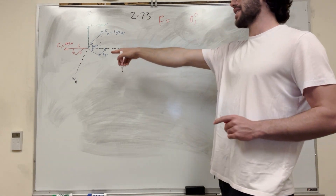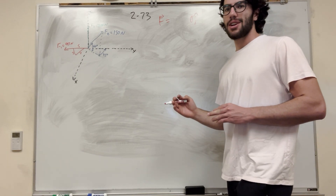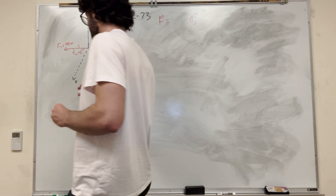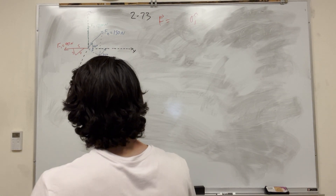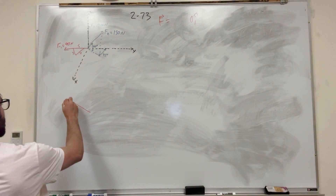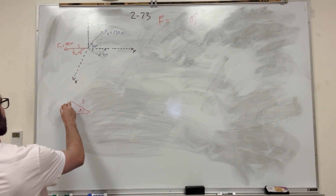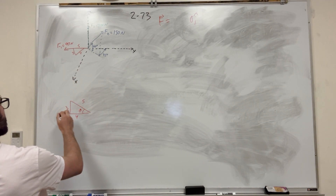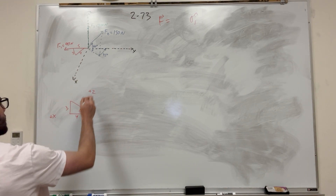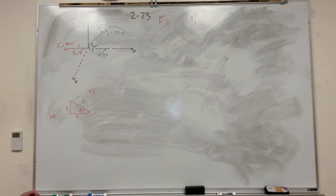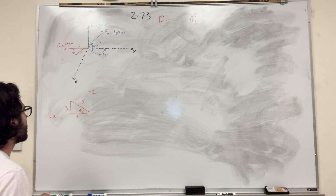What we're trying to find is the x and the z. We have this triangle here. Let me redraw this triangle in a more flat sense. The triangle looks like this — we have theta, and we have a 3-4-5 triangle, with positive x on the bottom and positive z on the vertical. We can use cosine and sine to find the components.